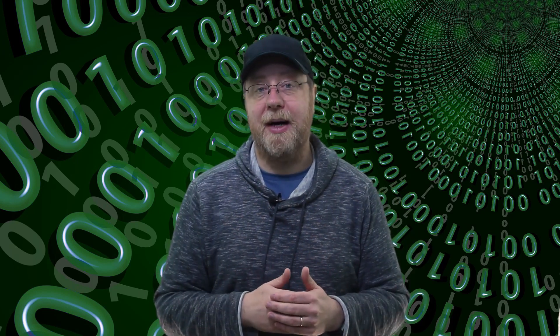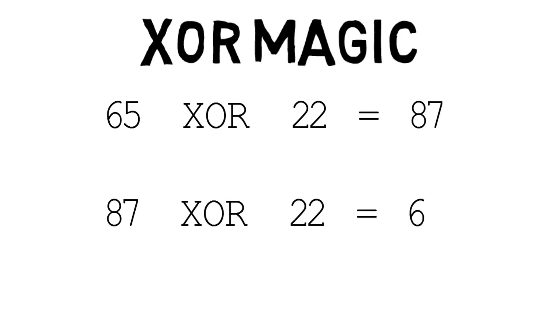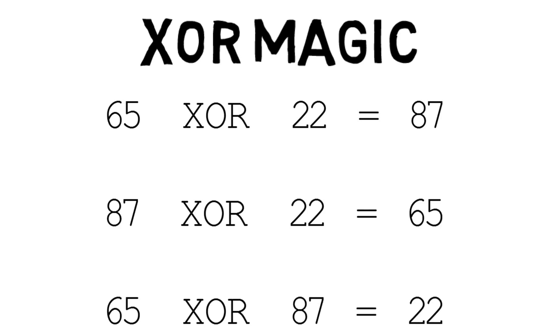Now this has some amazing side effects. Because if you exclusive OR one number with another and take the result, you can use that result to exclusive OR it with one or the other of the two original things to give you back the missing number. For example, if you take 65 and exclusive OR it with 22, you get 87. If you take 87 and exclusive OR it with 22, you get back 65. And if you take 65 and exclusive OR it with 87, you get 22 again. So it's a great way of reconstructing missing data if you only have two parts of the three bits of information.